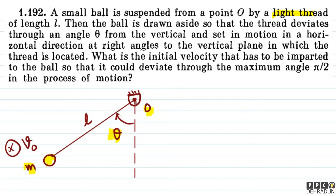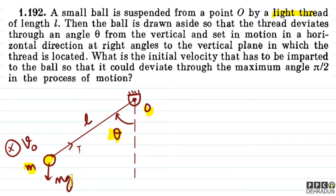A pi by 2 angle of deviation means: if you can see the thread is in the plane of the screen, then there is another dimension of 90 degrees — the thread moves into the horizontal plane. So there is a part of the thread in the horizontal plane.